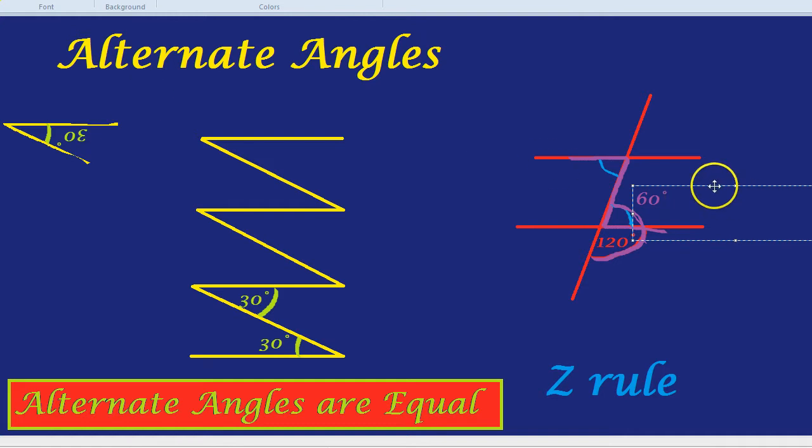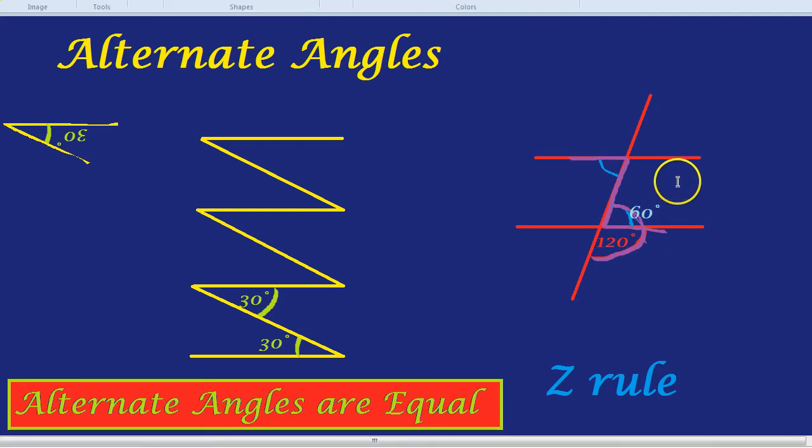This angle in blue, let's change the font to blue, is indeed 60 degrees. But we know from the alternate angle rule that this angle, which is 60 degrees, is the same as the angle up here. So to answer our question, that angle is indeed 60 degrees.